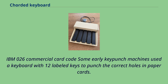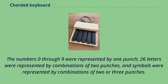Some early keypunch machines used a keyboard with 12 labeled keys to punch the correct holes in paper cards. The numbers 0 through 9 were represented by one punch, 26 letters were represented by combinations of two punches, and symbols were represented by combinations of two or three punches.